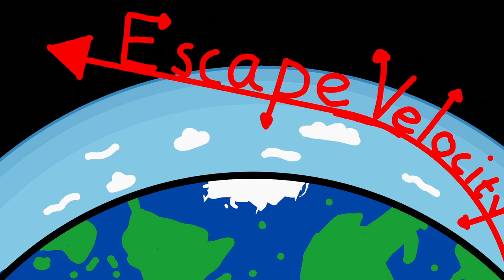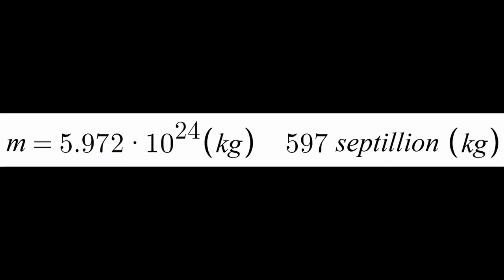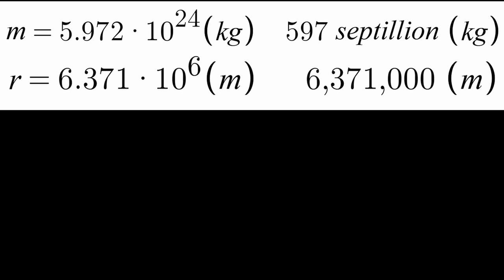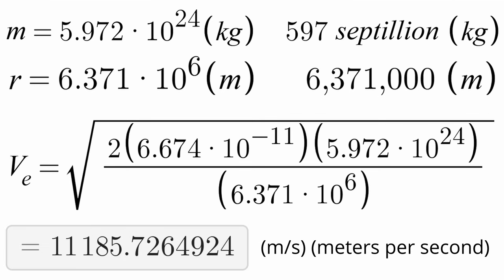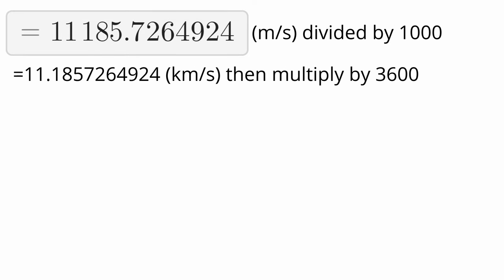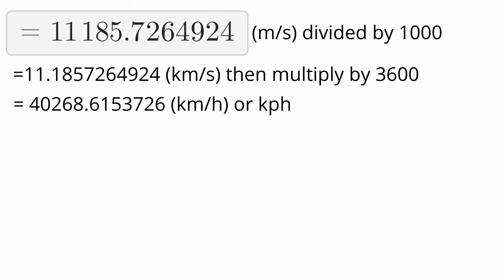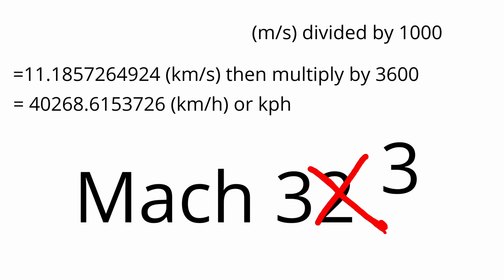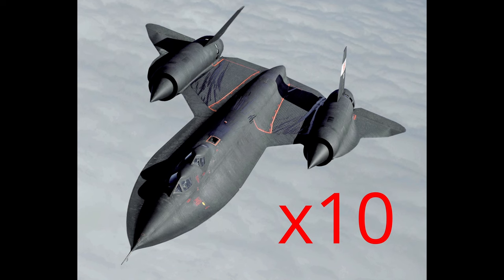As a quick demonstration, let's calculate the escape velocity for Earth. The mass of Earth is 5.972 times 10 to the power of 24 kilograms, or 597 septillion kilograms, and the radius is 6.37 times 10 to the power of 6 meters, or 6,371,000 meters. Plugging all that into the equation gives us 11,185.7264924 meters per second — doing some conversion gives us 11.1857 kilometers per second, or 40,268.6 kilometers per hour, which is around Mach 32. That's basically 10 times faster than the maximum speed of a Lockheed SR-71 Blackbird, the fastest plane in history.